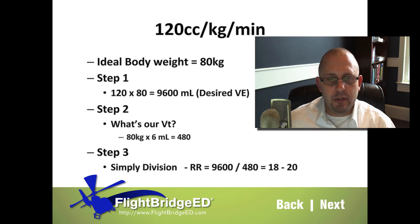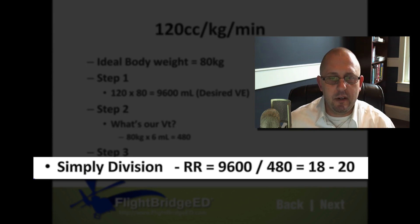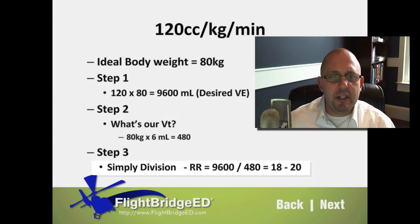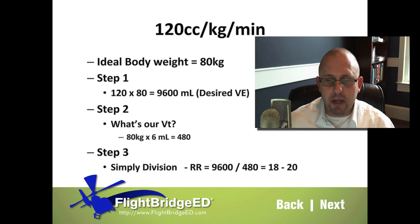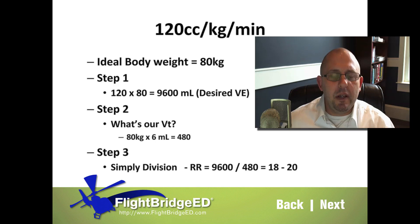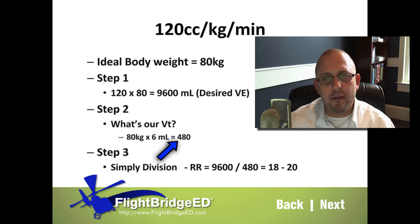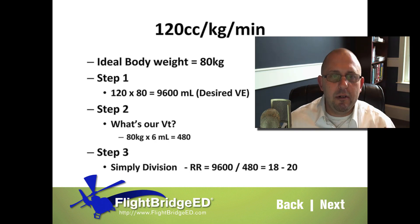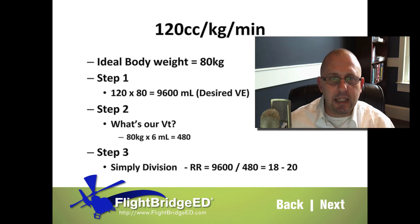Now we do simple division. We take our desired minute ventilation of 9,600 mils and divide by our tidal volume. Remember: minute ventilation equals tidal volume times rate. We have our desired minute ventilation and our tidal volume — we just don't have our rate. So 9,600 divided by 480 equals approximately 18 to 20 breaths per minute.